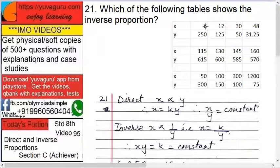So what are the values here? For table 1, X values are 6, 12, 30, 48, and Y values are 250, 125, 50, 31.25. We want to go through each and every table.